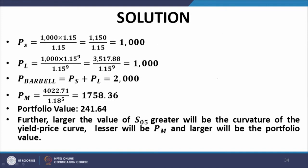Let us evaluate the strategy. For the S bond, that is the short maturity bond, the value of the bond is 1000 at t equal to zero, and for the long maturity bond also it is 1000. Therefore the value of the barbell before the shift is equal to 2000, and the value of the mid maturity bond after the shift is equal to 1758.36.